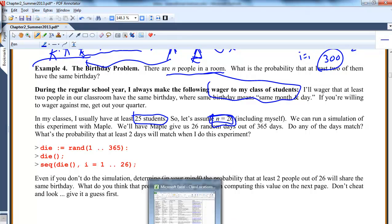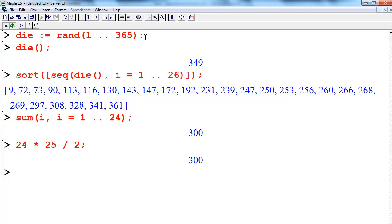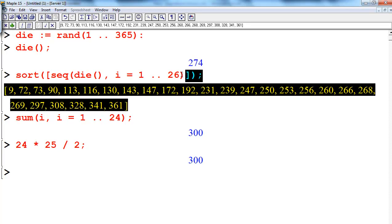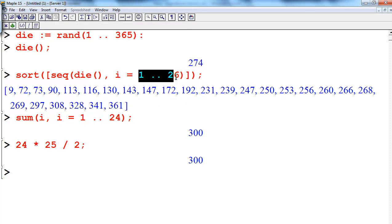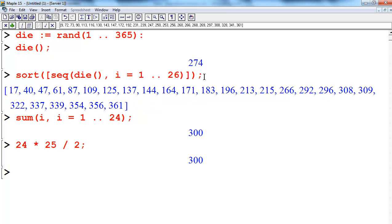I can run this simulation in Maple just to kind of show you what I'm doing. I can make a die that's 365 sides representing 365 days of the year. This command die is just going to roll the die. And now what I'm going to do is roll the die 26 times and I'm going to see if there's any identical numbers here. That would mean out of 26 people, two or more match. So I rolled it.